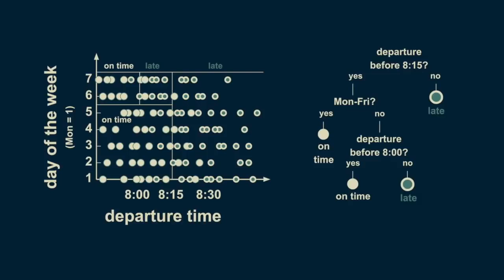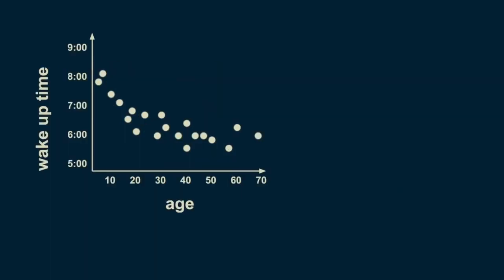Now we can look at an example with a continuous target variable rather than a categorical one. When a model is used to make predictions about continuous numerical variables, it's also called a regression tree. So far we have looked at one and two-dimensional classification trees; now we'll look at regression trees. Let's consider the question of what time someone wakes up, as predicted by their age. The root of our regression tree is an estimate for the entire dataset. If you had to make an estimate without knowing someone's age, a reasonable guess would be 6:25. This is the root of the decision tree.